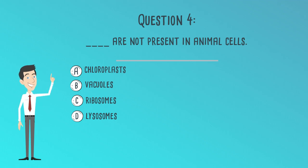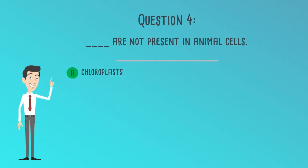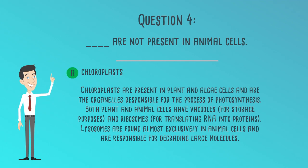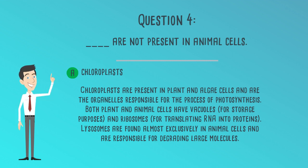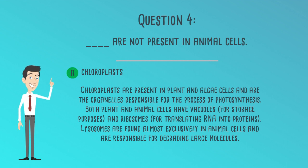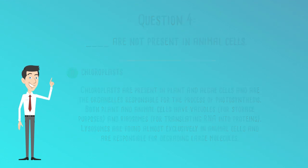Answer A. Chloroplasts is the correct answer. Chloroplasts are present in plant and algae cells and are the organelles responsible for the process of photosynthesis. Both plant and animal cells have vacuoles for storage purposes and ribosomes for translating RNA into proteins. Lysosomes are found almost exclusively in animal cells and are responsible for degrading large molecules.